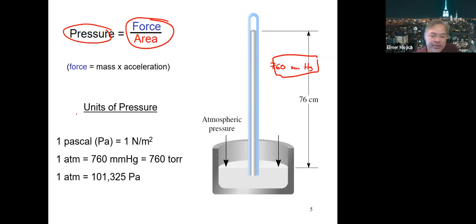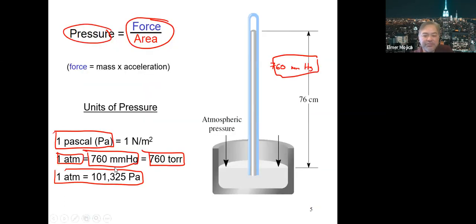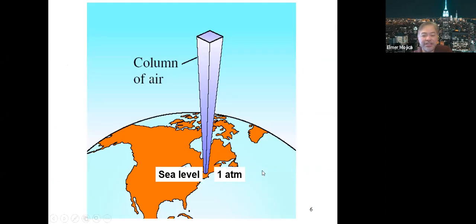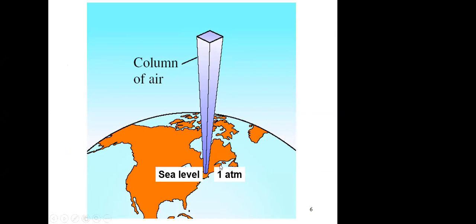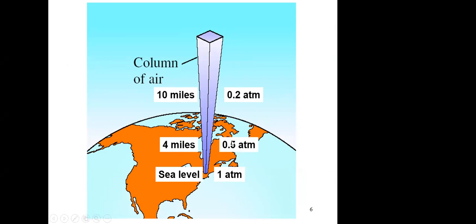There are different units of pressure. The SI unit is the Pascal, where 1 Pascal equals one newton per meter squared. The commonly used unit is one atmosphere, which equals 760 millimeters of mercury. One atmosphere equals 101,325 Pascals. The pressure at sea level depends on elevation — the higher the elevation, the lower the pressure. This topic accounts for about 20% of the exam.